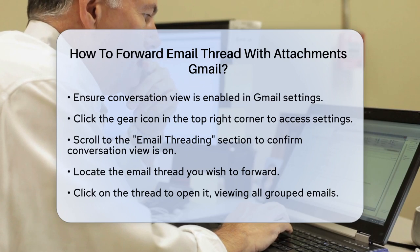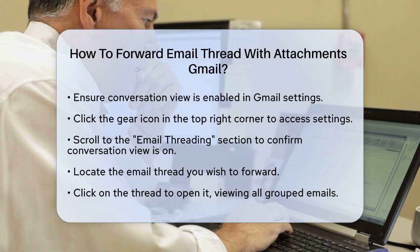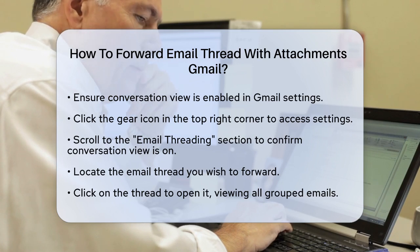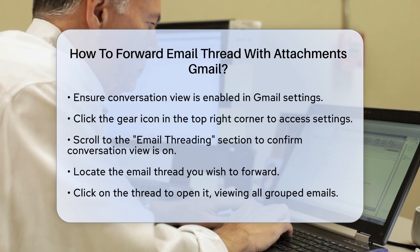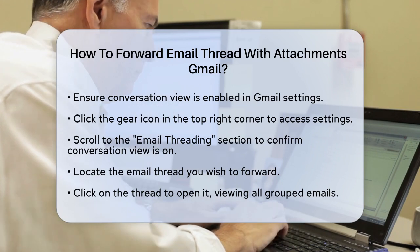First, you need to ensure that the conversation view is turned on in your Gmail account. To do this, click on the Settings button, which looks like a gear icon, in the top right corner of your Gmail. This will open the quick settings.